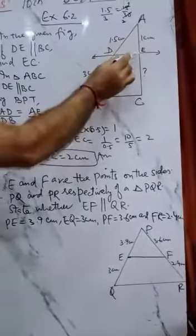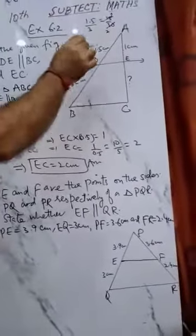EC equals 2 centimeters. So same ratio. This is BPT.